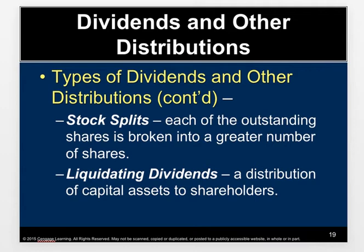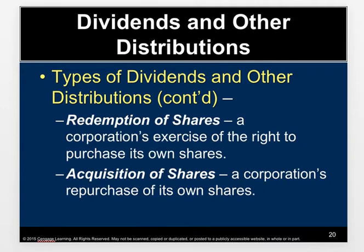Liquidating dividends are a distribution of capital assets to shareholders — usually during the wind-down or liquidation phase of a corporation, where the company is distributing its capital assets because it's no longer going to be doing business. Redemption of shares is a corporation's exercise of the right to purchase its own shares. Companies do this partly to control the stock price — by buying back shares, you limit the supply, and when supply is limited, price goes up.